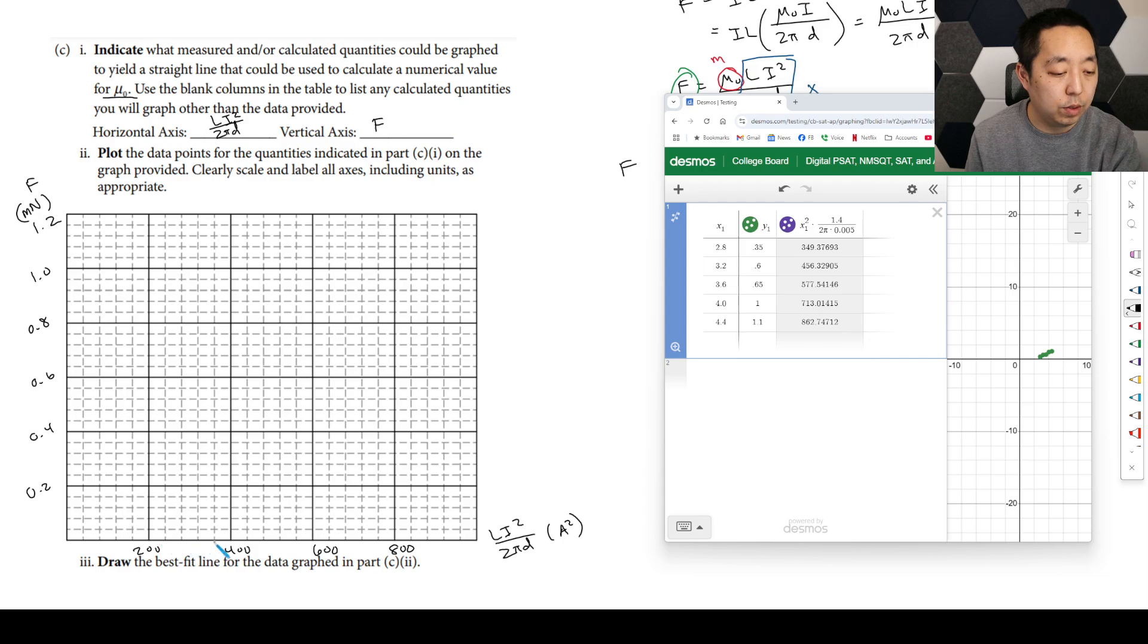So then we're going to have 349. So each of these is 200. So 1, 2, 3, 4, 5. 200 divided by 5, each of these is 40. So 300 is going to be halfway in between. Sorry, 340. So 240, 280, 320, 360, somewhere around here. And then the y value is 0.35. So 2, 4, 2, 8, 3, 2, 3, 6, maybe around there. 456, 4, 40, 460, 456 is right around there. And then the y value is 0.6. So that's going to be right there.